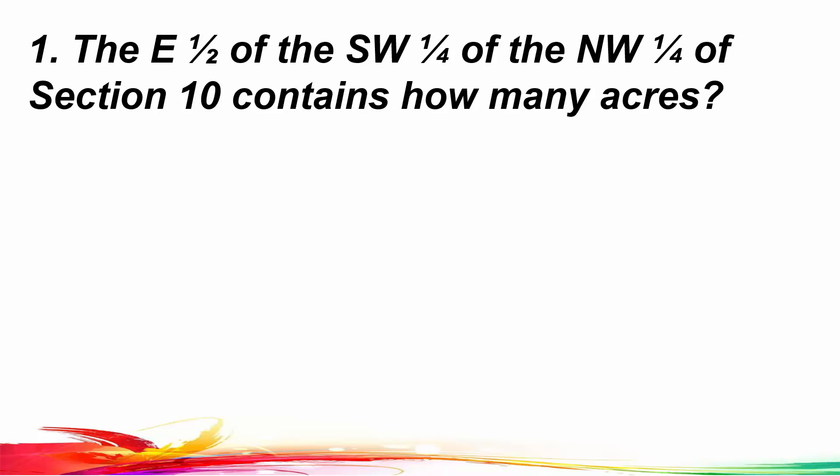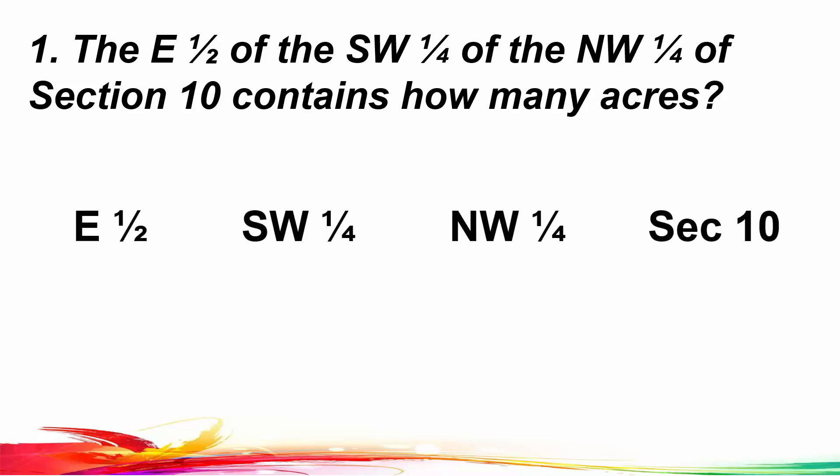Here's a description and we want to find how many acres are in it. Number one: the east half of the southwest quarter of the northwest quarter of a section contains how many acres? Whenever you're asked to find how many acres, you don't have to draw a picture. What you want to do is take your scrap paper and write down the description — the east half of the southwest quarter of the northwest quarter of section 10.